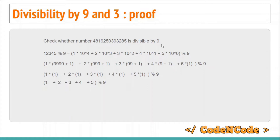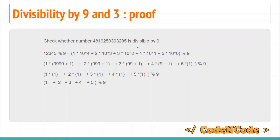The same goes for 3, because any multiple of 9 is also divisible by 3. So all those terms would still result in 0 under modulo 3, and again every 10^d reduces to 1. You are left with only the digits, so to test divisibility of any integer by 9 or 3, simply take the digit sum and check whether it leaves remainder 0.